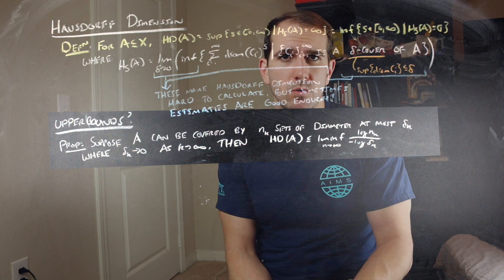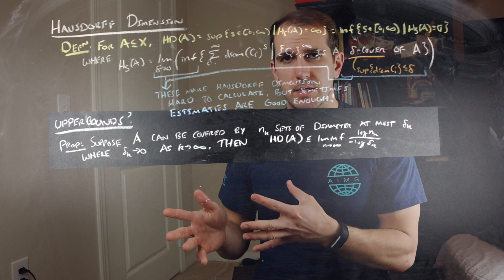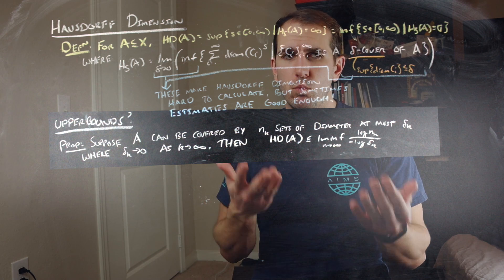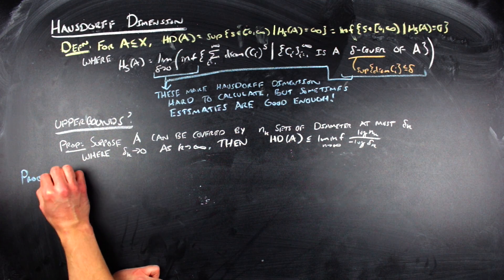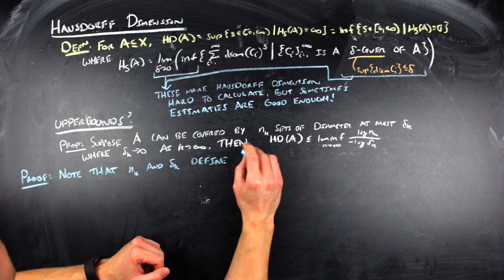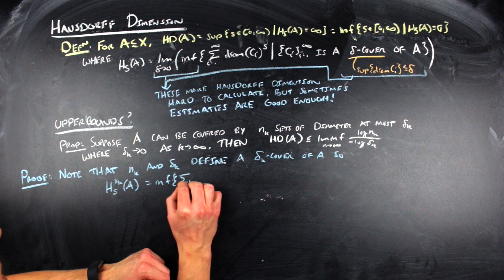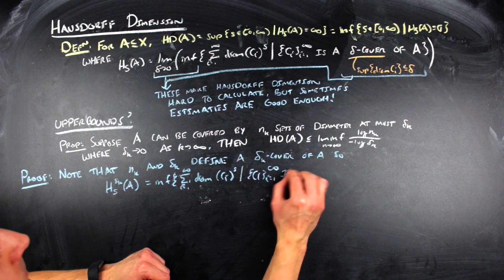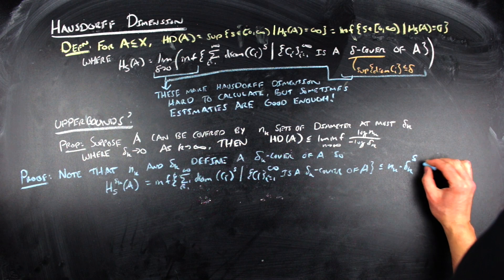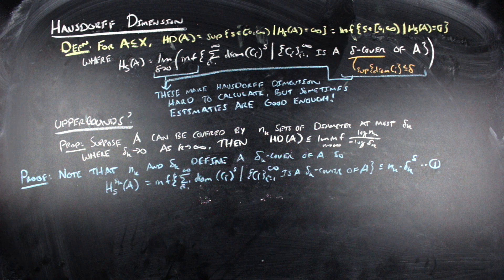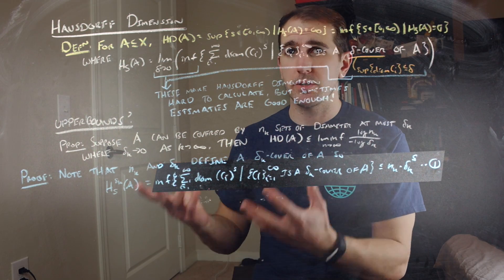The proof here doesn't use any special measure theory. It's really just about understanding what it means to have a delta cover and what the definition of Hausdorff dimension is. This proof starts by noting that n sub k and delta sub k define a delta sub k cover of A. So the delta k-th s-dimensional Hausdorff outer measure of A — which equals that definition above without the limit as delta goes to zero — is less than or equal to n sub k times delta sub k to the s.